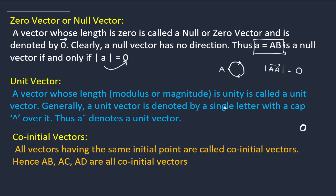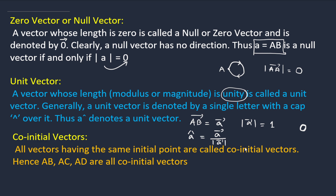Next comes the unit vector, which is very important. If the magnitude of a vector is unity — meaning one — then that vector is called a unit vector. It is denoted with a cap symbol, like â. The formula is: unit vector equals the vector divided by its magnitude. So â = ā / |ā|. Vector divided by its magnitude is always a unit vector.